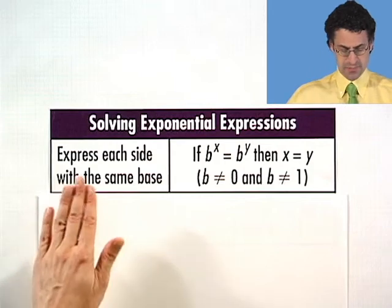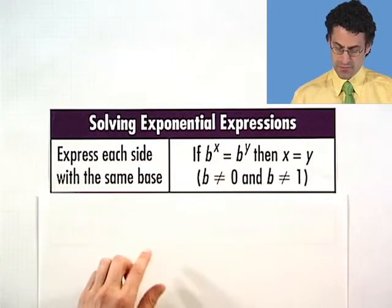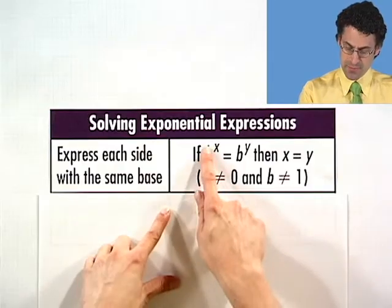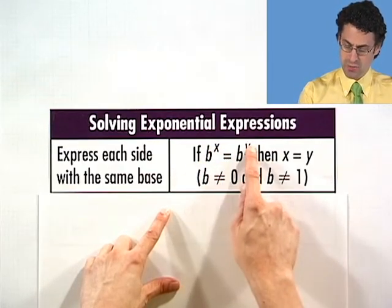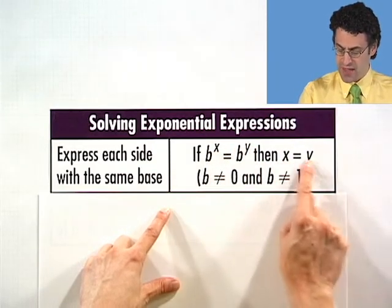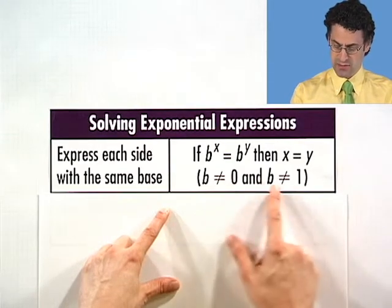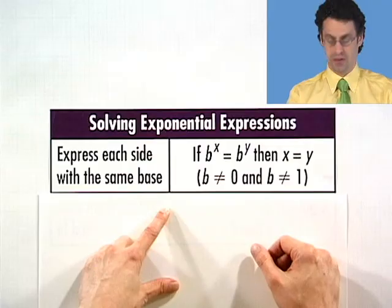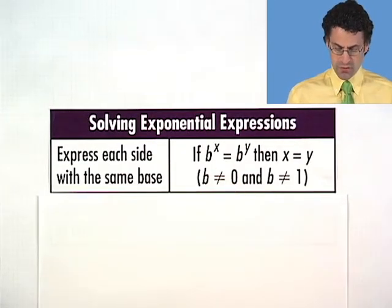The first step is to express each side with the same base. For example, if I have b to the x equals the same b to the y, then that automatically tells me that the x and the y have to be equal. And again, always with my bases, I'm assuming it's not 0 and not 1, and in fact bigger than 0.